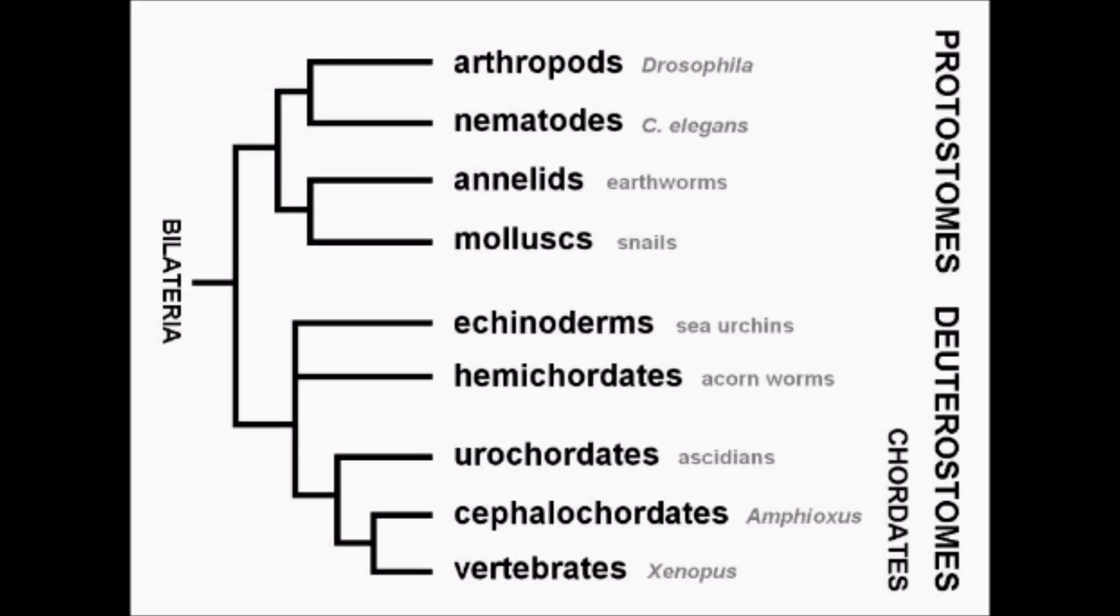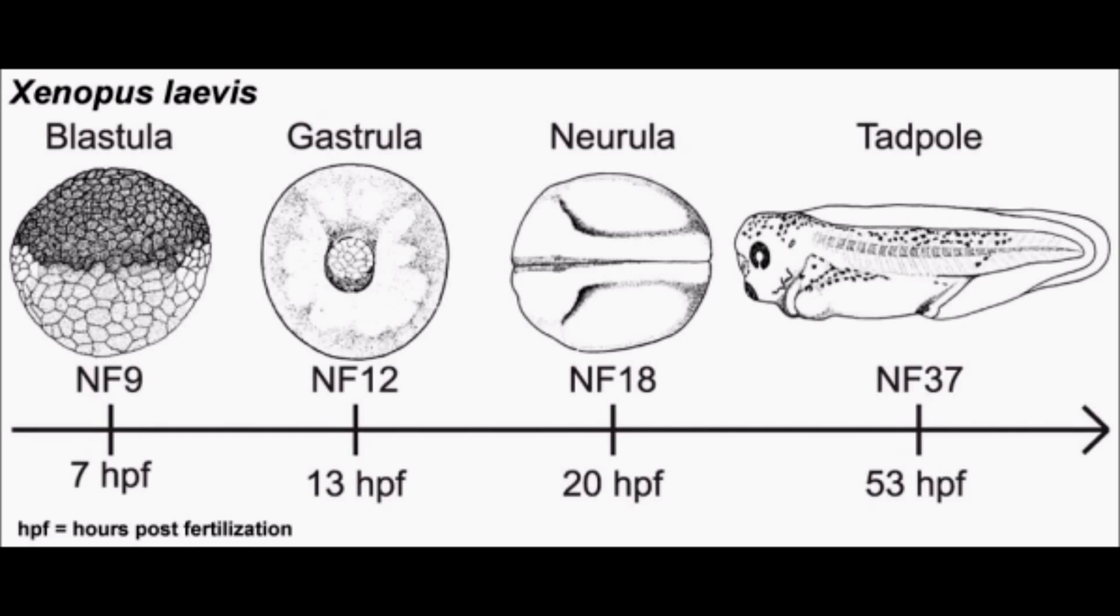They are closer to humans than fruit fly or nematodes, but take a relatively short time to get to the tadpole stage, about one day. This makes Xenopus a good model organism to study development.